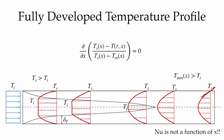Since the Nusselt number with respect to x is equal to hx over k, and the Nusselt number is a constant, the convection coefficient h is inversely related to x and decreases with distance along the channel.